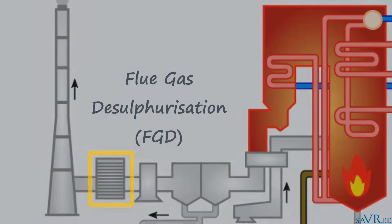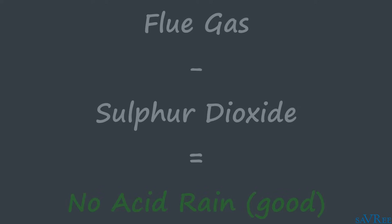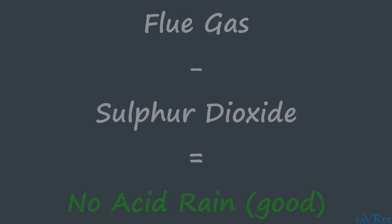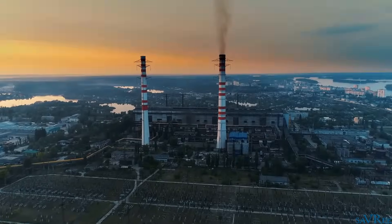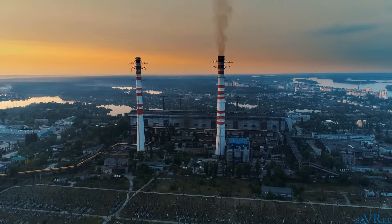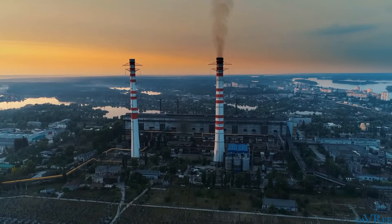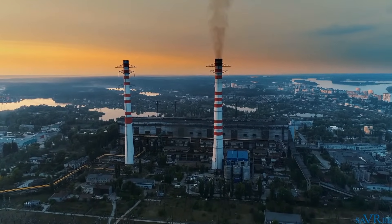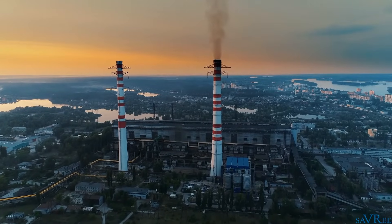And by removing the sulfur dioxide, we reduce the chance of producing acid rain. As with many processes involving power stations today and emissions, the use of flue gas desulphurization is closely linked to environmental protection and a growing awareness of the need to protect the environment.